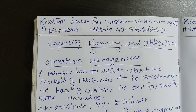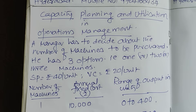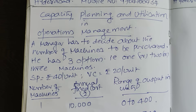Let us understand this with the help of a numerical problem. A manager has to decide about the number of machines to be purchased. He has three options: he can go for one machine, or two machines, or three machines.